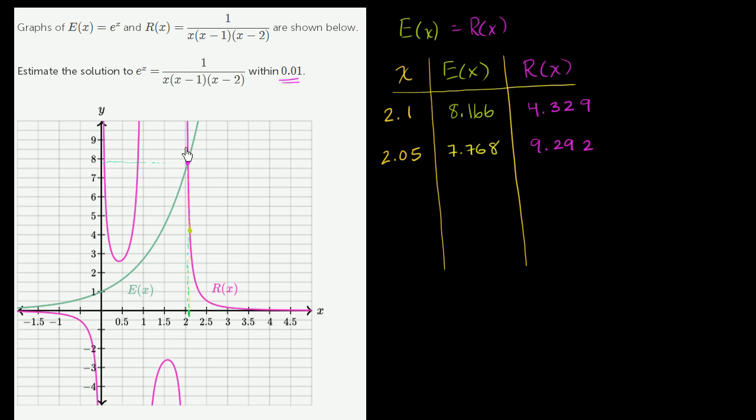So now we're on this side where R(x) is roughly right over here and it's more than e(x), which is at 7.7. So now our x value is too low. Let's see if we can go a little bit higher. Let's try to go roughly halfway between these two. But I don't want to get too precise because we have to get to the nearest hundredth, so let's go to 2.07.